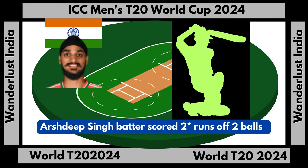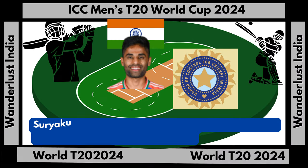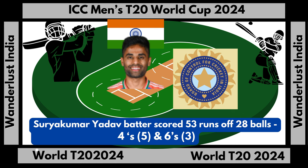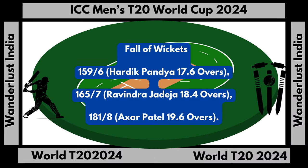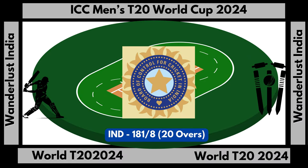Arshdeep Singh batted, scored 2 runs not out off 2 balls. Suryakumar Yadav batted, scored 53 runs off 28 balls with 4 fours and 3 sixes. India fall of wickets: 181 runs for 8 wickets. India total score: 181 runs off 8 wickets in 20 overs.